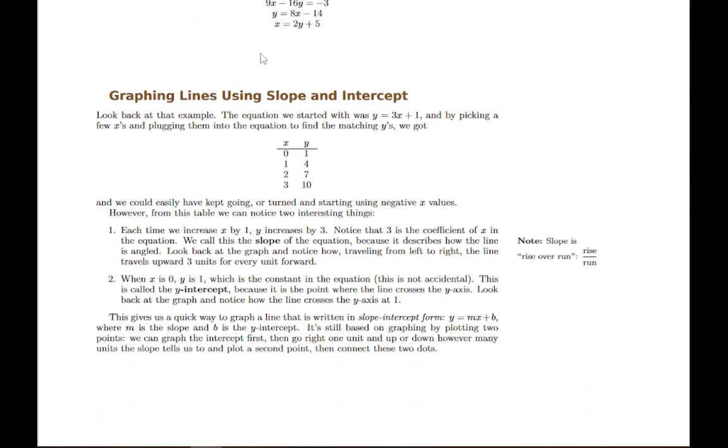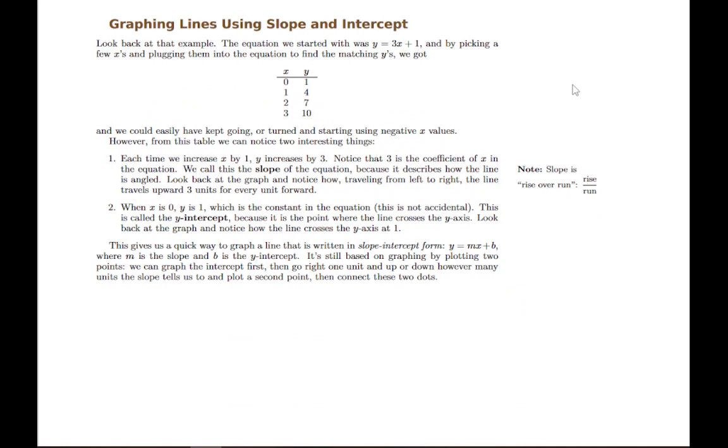So we basically just need a way to come up with two points on a line as easily as possible. One easy way to do it is if it's set up in this so-called slope-intercept form. We can very quickly read off the slope and the intercept, and if we can interpret what those things are, it gives us an easy way to graph the line.